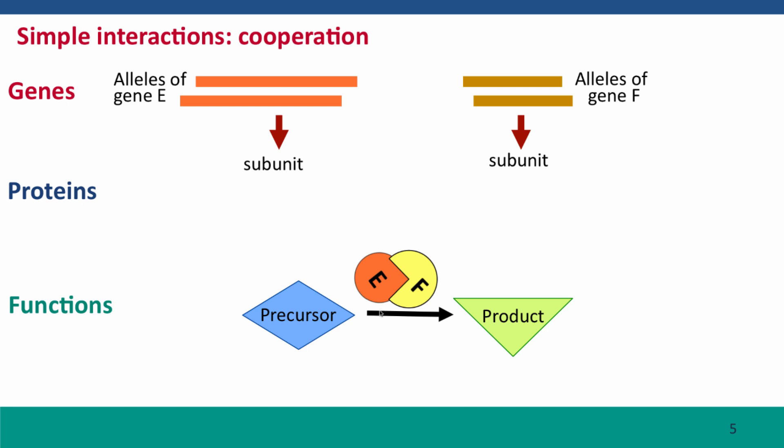So gene E produces subunit E, and gene F produces subunit F, and together they convert the precursor into the product.